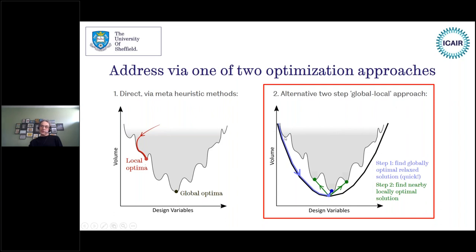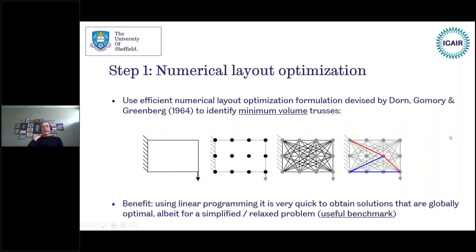In the global-local approach, we first solve a linear relaxation to get to the globally optimal relaxed solution — the bottom of the valley — where some constraints are relaxed. We then move from that globally optimal relaxed solution to a nearby local optimal using a second step. We use numerical layout optimization, a method that's been around for more than 50 years, which gives a solution quickly and also acts as a very useful benchmark against which other solutions can be judged.